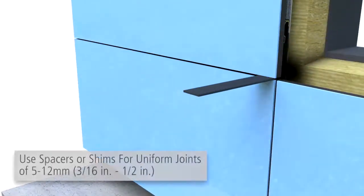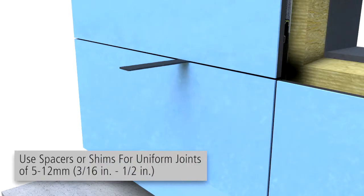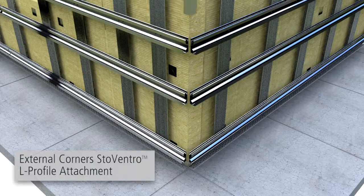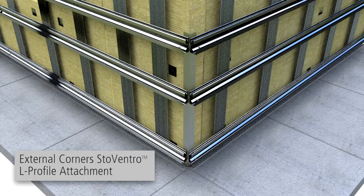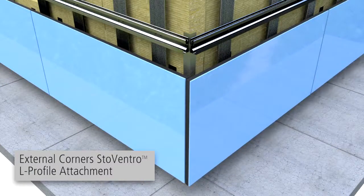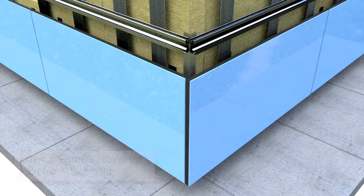At adjacent panels, spacers or shims should be used to ensure uniform joints between the panels. At external corners, the agraf profiles are connected with L profiles and the panels extend to meet the corner as shown. See the design guide for all edge type conditions.